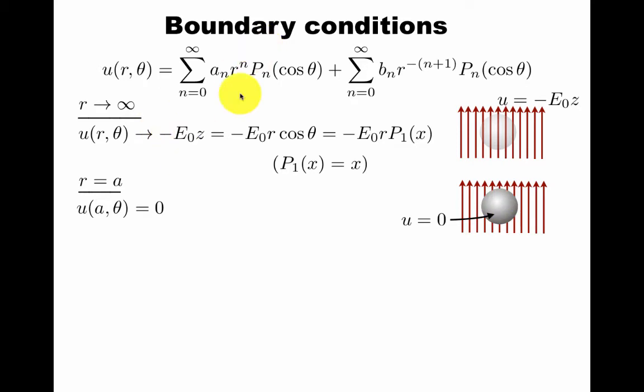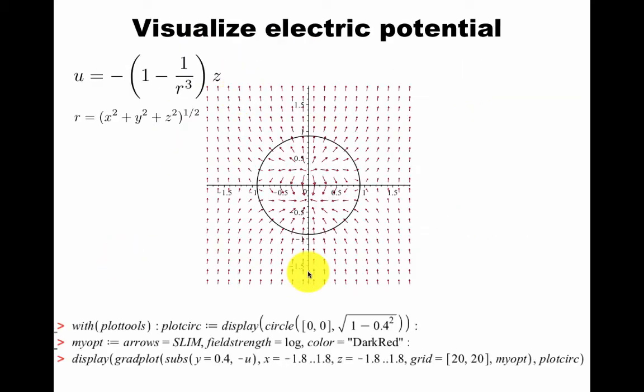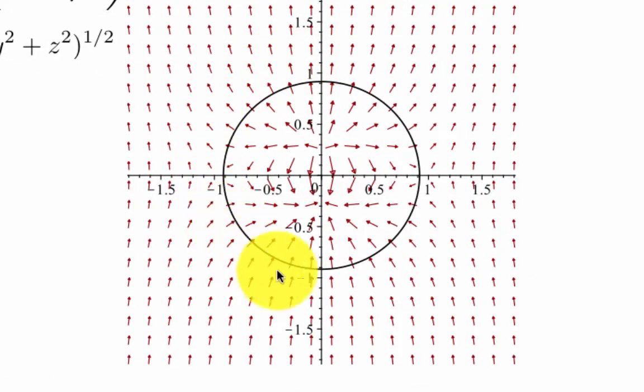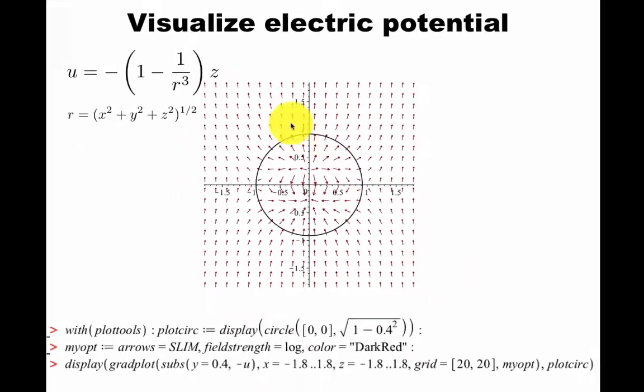Now we impose these on this more generic solution. Here's one attempt to visualize it. It's not exactly accurate, but roughly speaking, the electric field points upwards as we had boundary conditions so that it should at infinity. But close to the sphere, it will be orthogonal to the sphere, which is the condition of being a perfect conductor.